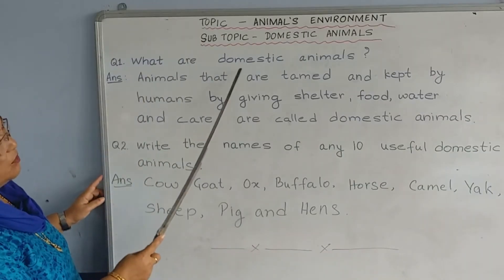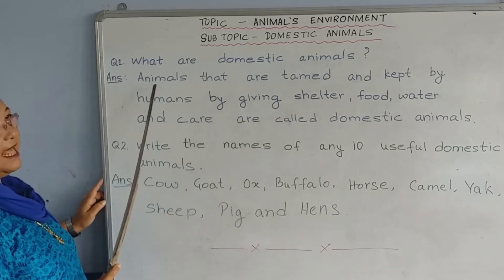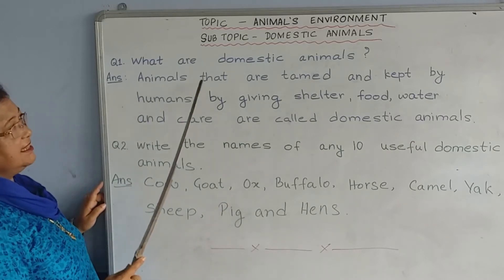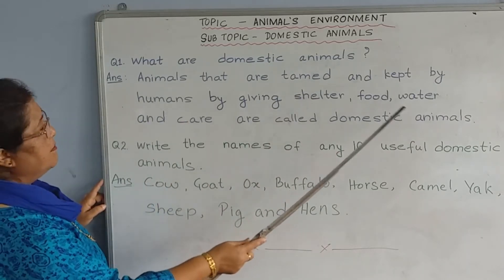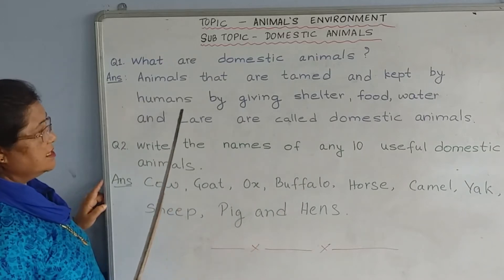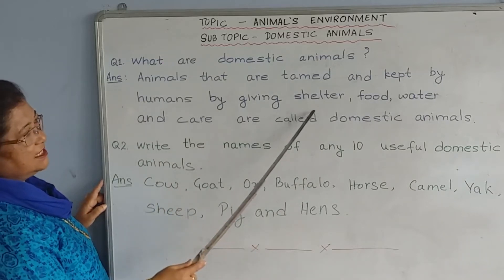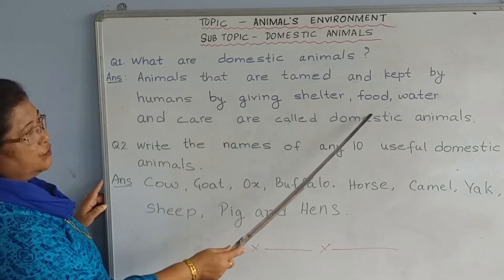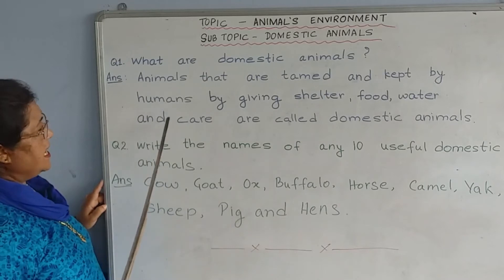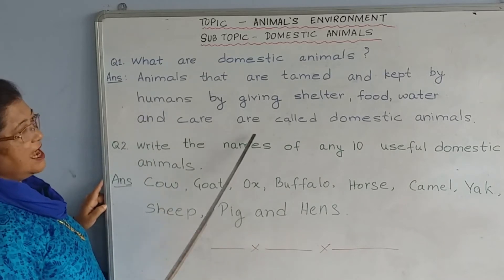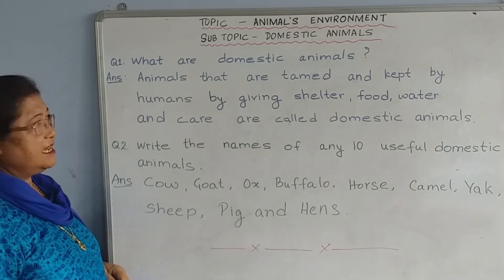What are domestic animals? Animals that are tamed and kept by humans by giving shelter, food, water and care are called domestic animals.